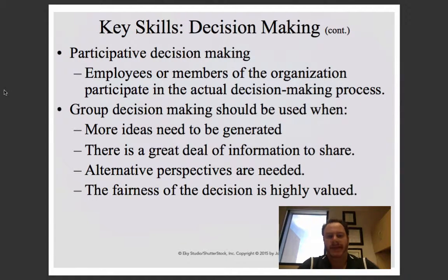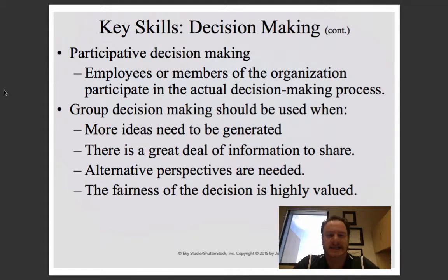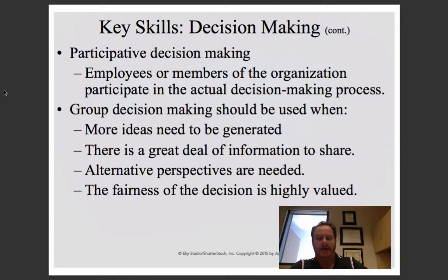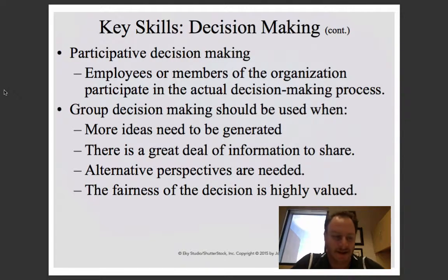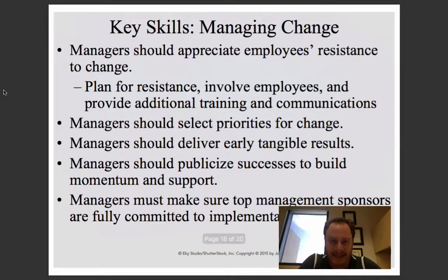Decision-making could be more participatory by including people from the organization to make it more egalitarian, or you could just do it yourself. The text suggests that group decision-making should be used when more ideas need to be generated, there's a great amount of information to be shared, alternative perspectives are needed, or fairness is highly valued — such as when a decision affects a great deal of people.